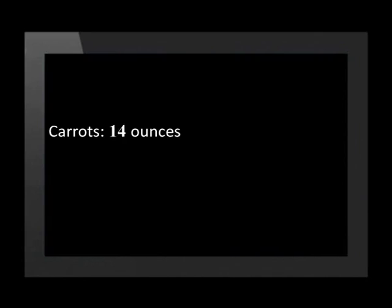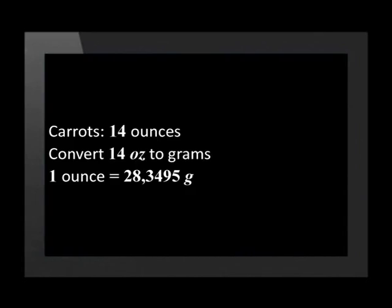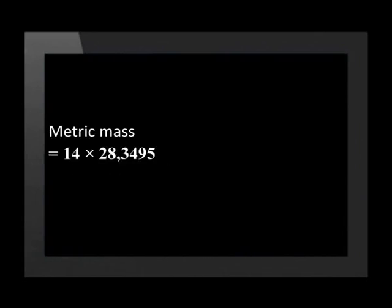It is not practical to buy 3,721 kilograms of lamb. When you go to the butcher, it will make more sense to buy 4 kilograms of lamb. The recipe calls for 14 ounces of carrots. Convert 14 ounces to grams. One ounce is equal to 28,3495 grams. To find the metric mass, we multiply 14 by 28,3495 grams.